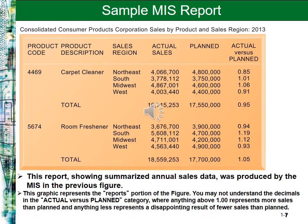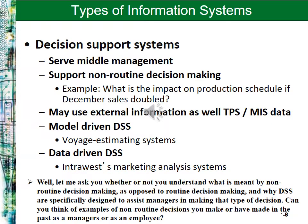The simplified MIS report shows how it summarizes annual sales data and presents it to managers in order to make decisions based on the reported information. The Decision Support Systems serve middle management and support non-routine decision making — for example, something like: what is the impact on production schedule if December sales were doubled? They may use external information as well as TPS and MIS data.